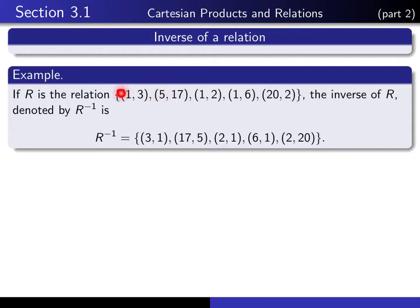From (1,3) in the original relation we put (3,1) in the inverse. (5,17) goes to (17,5). You just simply reverse the order of all of the entries of the original relation R, and we call that R inverse.